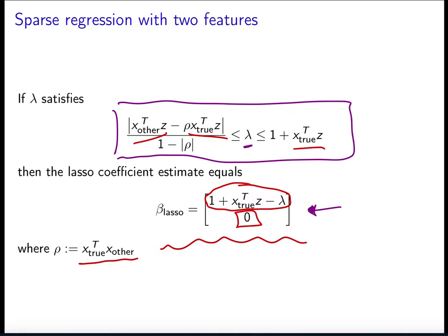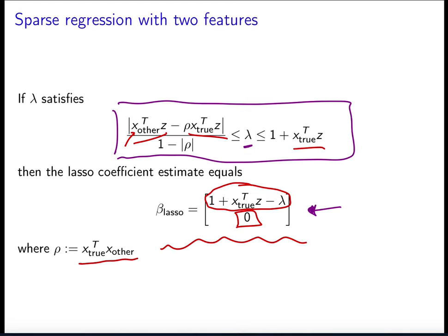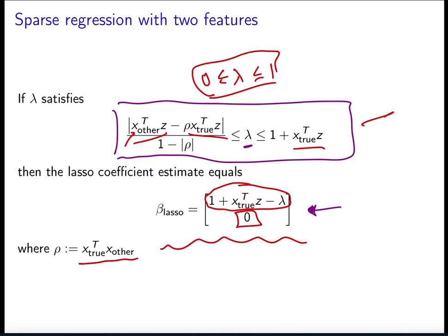The reason we have dependence on the correlation between the noise and the true features is that if the noise is correlated with the true features, it might be reasonable to think that the response actually depends on that feature — and it might be reasonable to include it in the model. So we want to think of the noise Z as being essentially uncorrelated with the two features. If it's completely uncorrelated, then lambda needs to be between zero and one, which is a pretty large range that we would find through cross validation. We're proving that within this range the lasso is going to work.